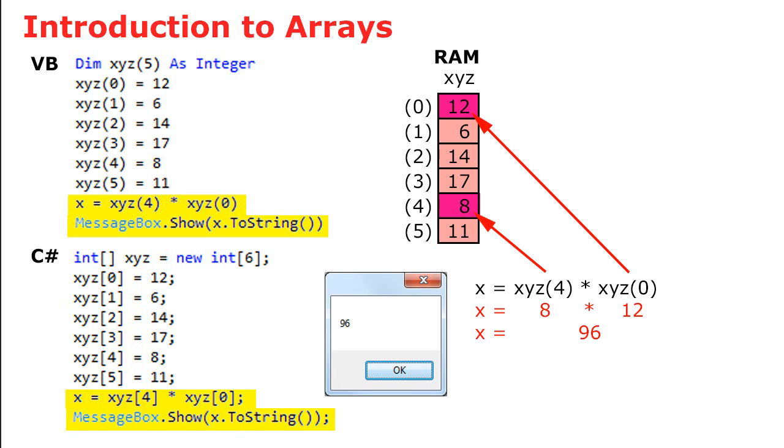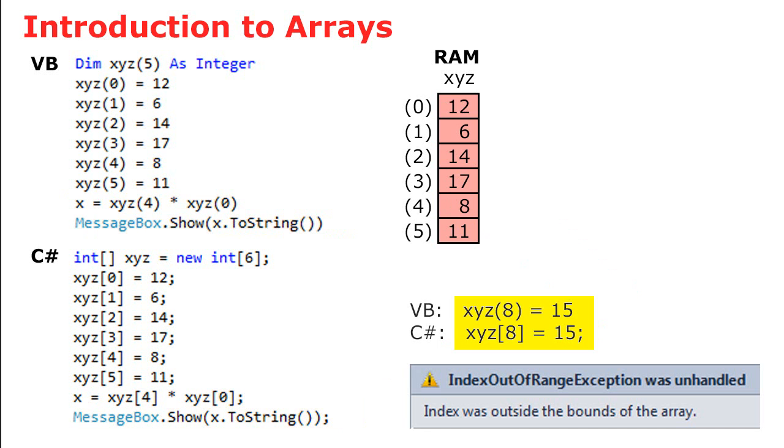If I want to get the information stored in memory in an array, I can simply refer to the element. So here we have x equals xyz sub-four, that's a value of eight, times xyz sub-zero or element zero, that's a value of twelve. And so x is going to equal ninety-six, eight times twelve, and that's what is displayed in the message box. If however I were to try to place a value into xyz element eight, I would get an error. The error would be because I'm outside of the range of index numbers. We only declared six elements.